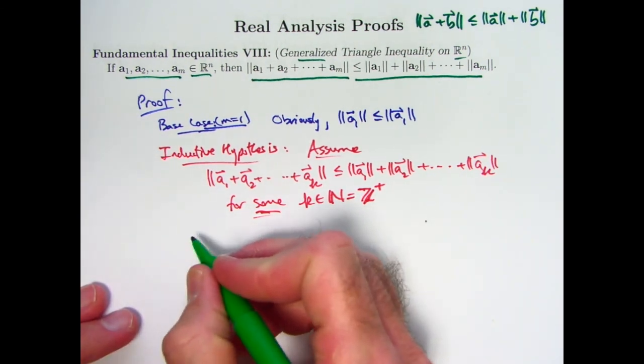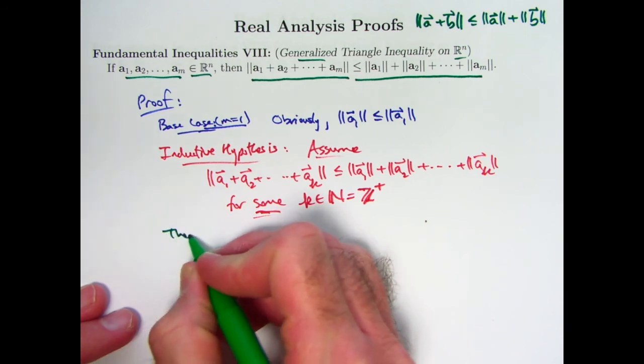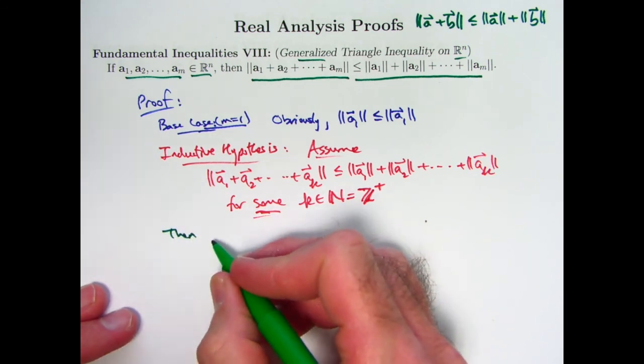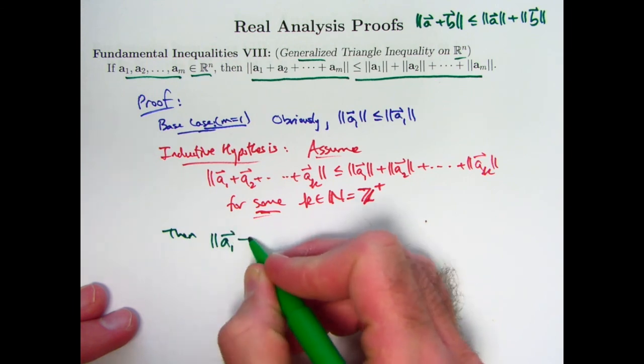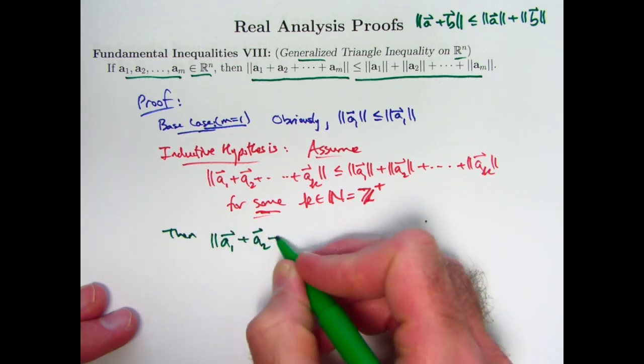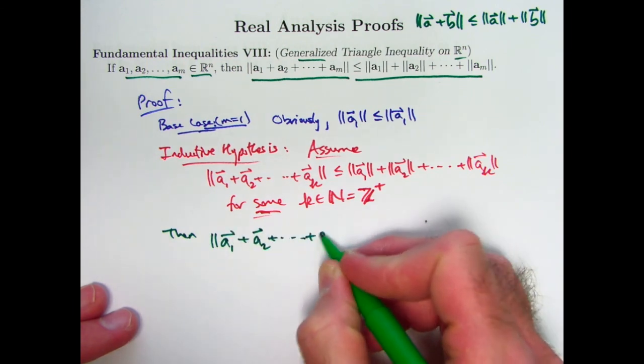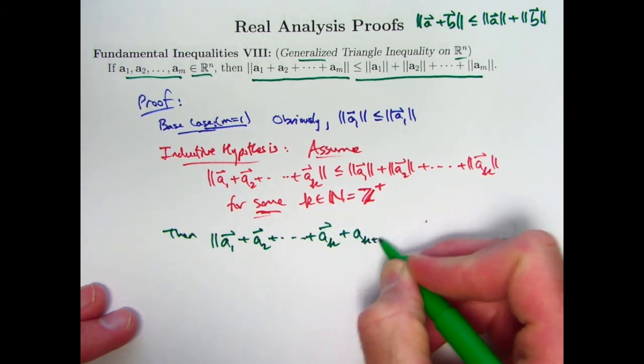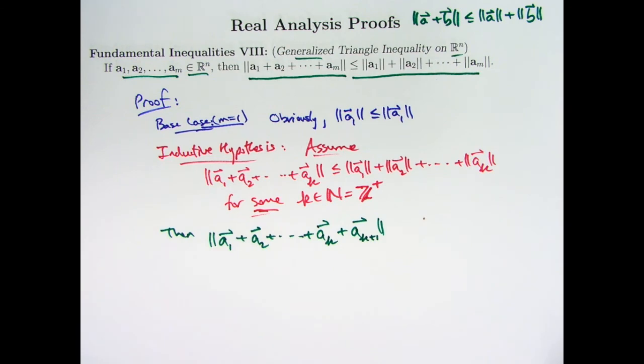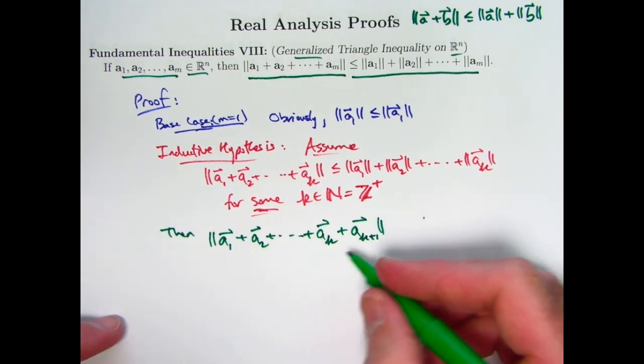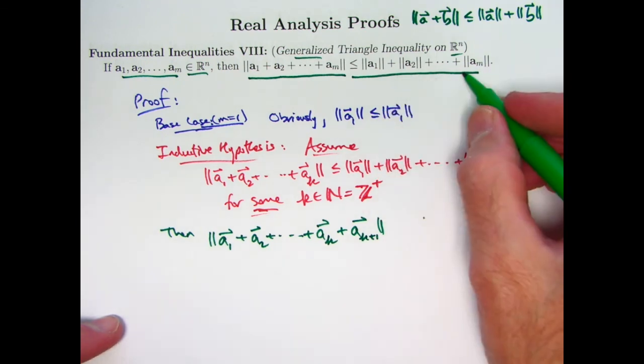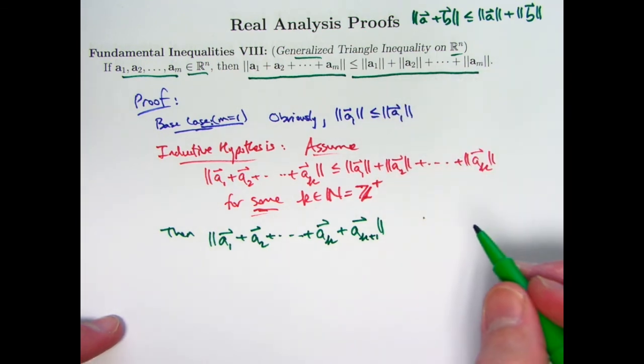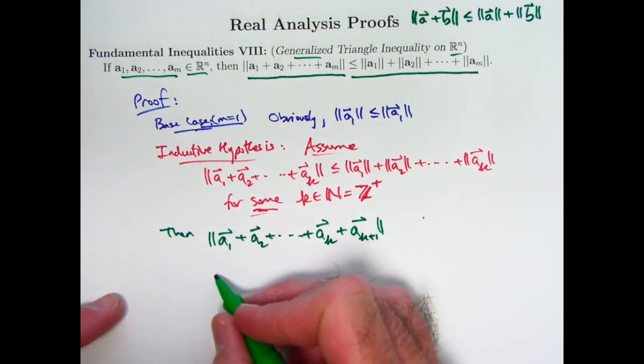Alright, so that's what we do next. Then if we've got a k plus first term, so we have k plus 1 terms in the sum. Let me write that like this. I want to show that it follows that this is less than or equal to this kind of expression, except the last term is going to be k plus 1. How do you do that? Well, it's again fairly simple.